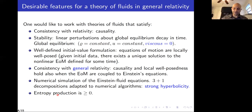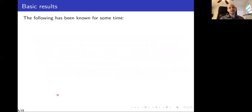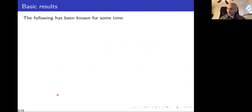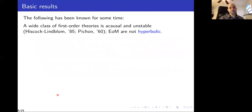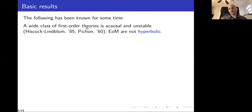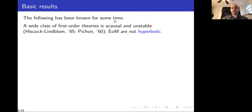So we have a very long list of requirements. We know that a large class of first-order theories is acausal and unstable, and this class includes the Eckert and Landau-Lifshitz theories. What is behind this instability and lack of causality is that the equations of motion turn out not to be hyperbolic.